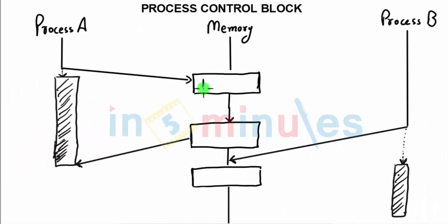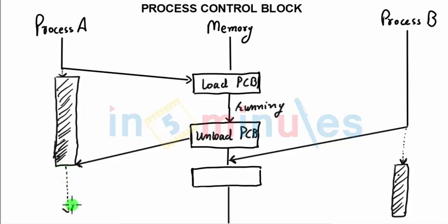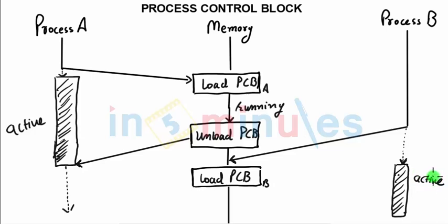In this first process, A will load its PCB. This PCB carries all the needed information including the register state and other things for A, and now it is running. When the process is over, or the time quantum given to process A is over, process A will first unload its PCB and becomes inactive. Now process B will load its own PCB, and process B which was inactive till now becomes active. By using context switching, a process which was waiting for the processor will always get the processor when needed, but it is compulsory that process A has to unload its own PCB first before process B can load it.